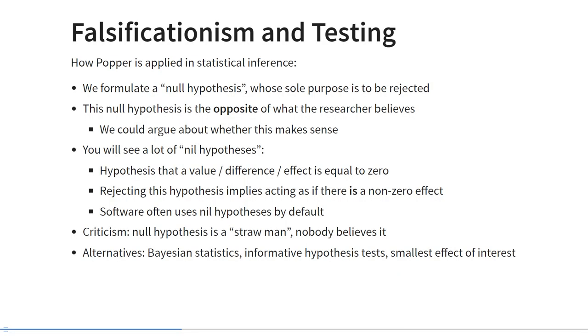Popper further argues that the purpose of testing is to cast doubt on hypotheses, not to provide evidence in favor of them. For example, if your hypothesis is that all swans are white, your task as a scientist is to go looking for black swans. So how is Popper's reasoning applied in statistical testing? One way is that scientists typically formulate null hypotheses whose only purpose is to be rejected. Often this null hypothesis is the opposite of what the researcher actually believes.